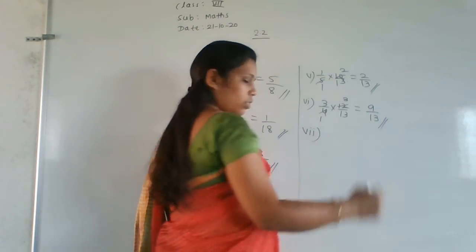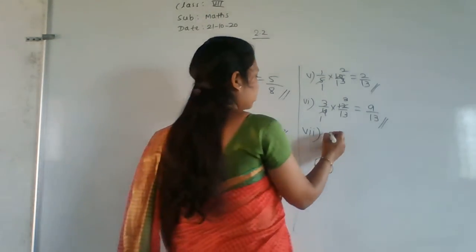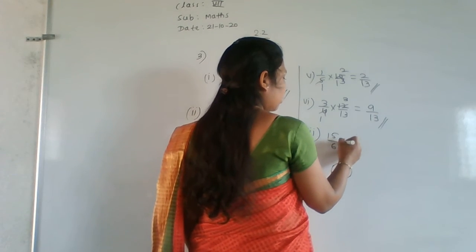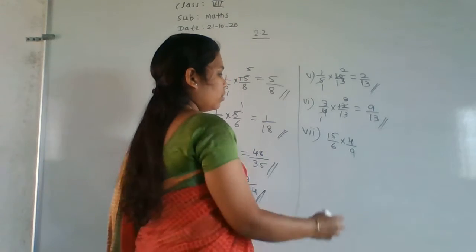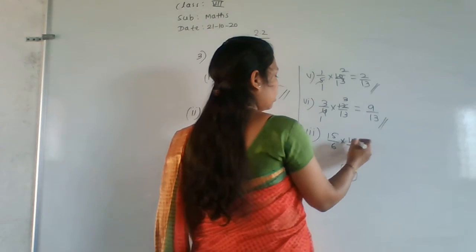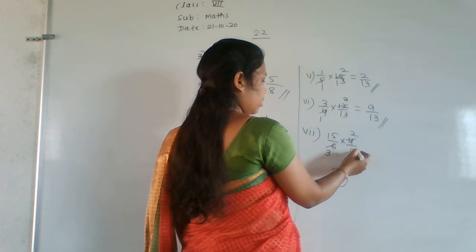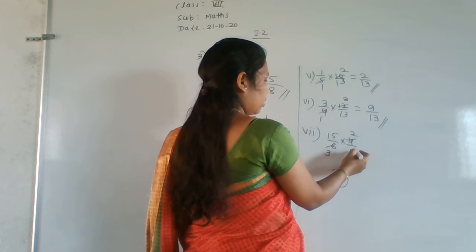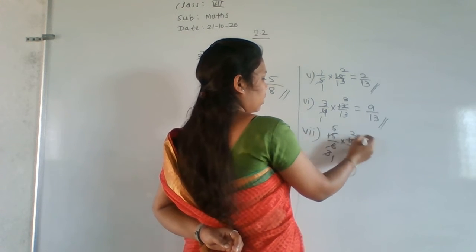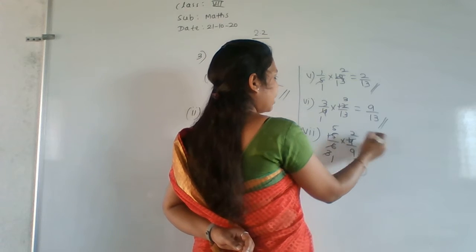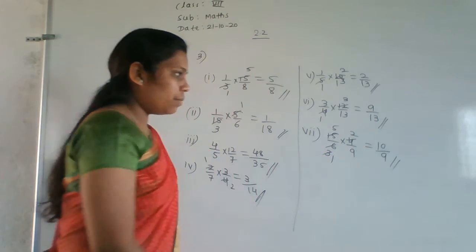Seventh question: 15/6 × 4/9. Cancel 6 and 4: 2 threes are 6, 2 twos are 4. Cancel 15 and 9: 3 fives are 15, 3 threes are 9. Remaining numerator: 5×2=10. Denominator: 1×9=9. Answer is 10/9.